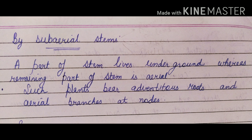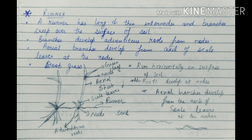Such stems are found in many herbaceous plants. These plants bear adventitious roots and aerial branches at nodes. In such plants, a part of the stem lives underground whereas the remaining part of the stem is aerial. Runner and Stolon are types of sub-aerial modified stems.